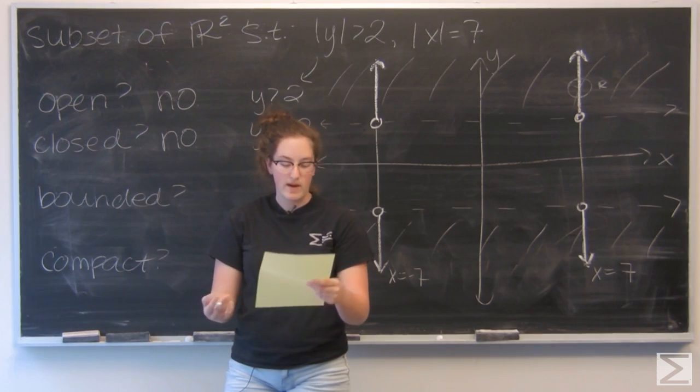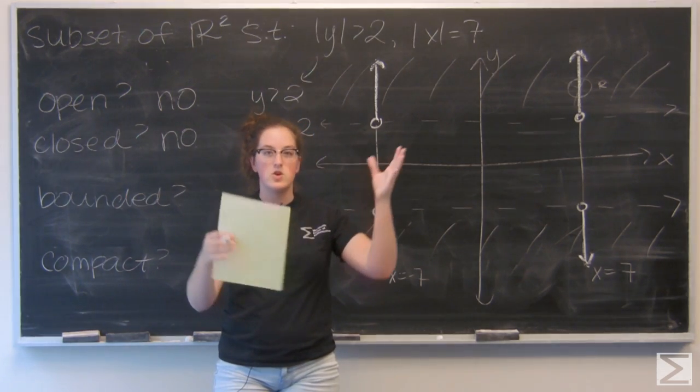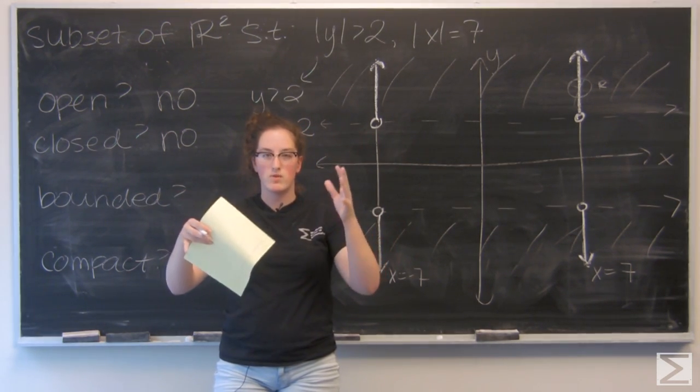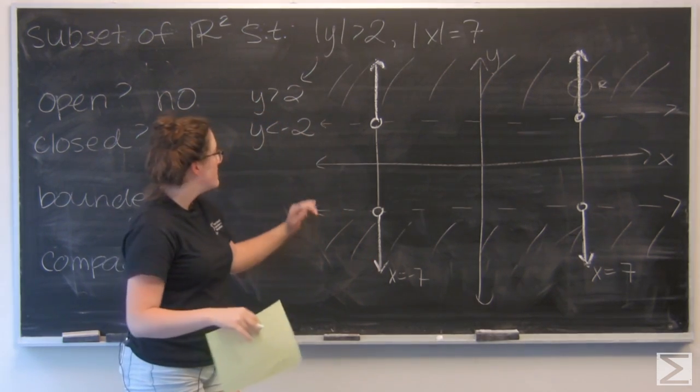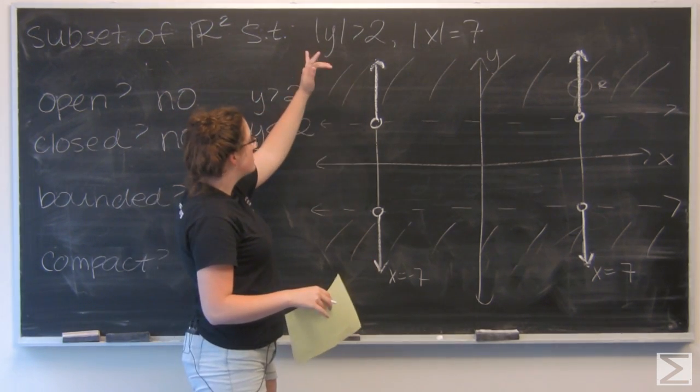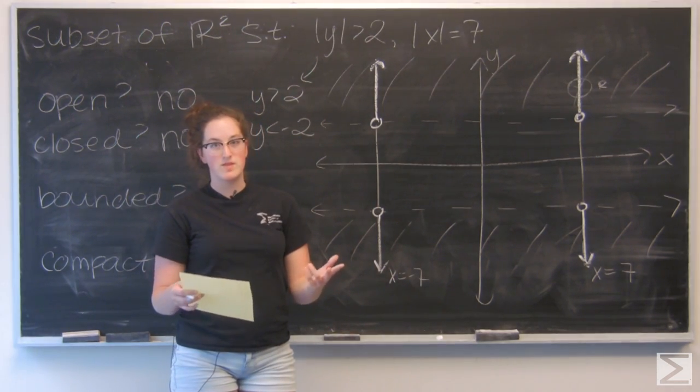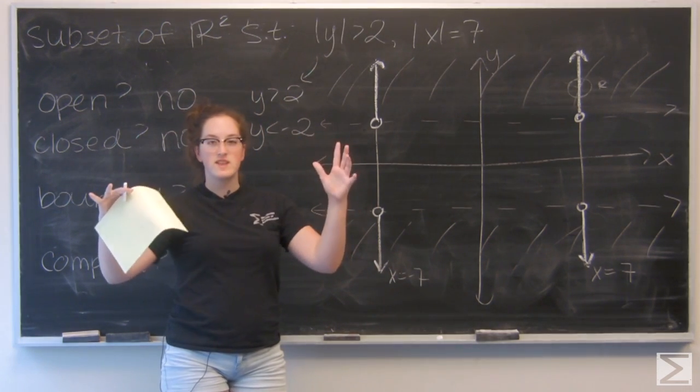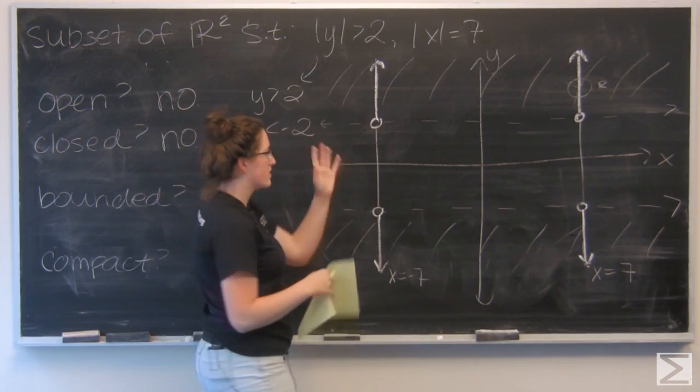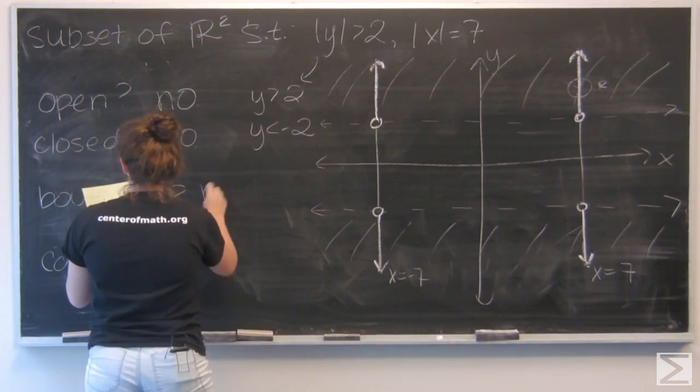And is it bounded? A bounded set can be contained in a ball around the origin for some radius r. This set extends upwards to infinity and downwards to negative infinity. So we can't really say it's bounded. There's no sphere that I can put this set in or circle in this case. So no.